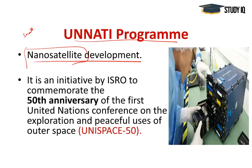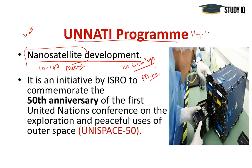Not all small satellites are the same. A spacecraft weighing between 100 to 500 kg is called a mini satellite. If it weighs between 10 to 100 kg, it is called a micro satellite. A nano satellite has a mass range of 1 kg to 10 kg. If a spacecraft weighs between 100 grams and 1 kg, it is called a pico satellite — and we can even make satellites weighing less than 100 grams.